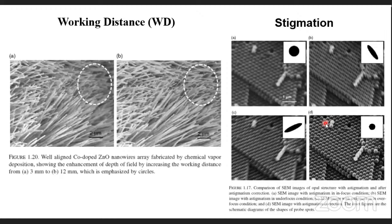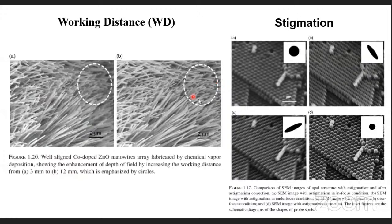Working distance is also very important. For our instrument, working distance can vary up to 40 mm — it is the distance between the lens and the sample. At a working distance of 3 mm, you can't see the perfect morphology, but at 12 mm working distance, you can see very clear needle-like morphology. These parameters are all adjusted by the technical staff.